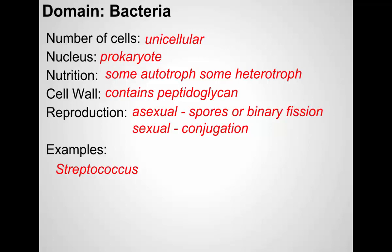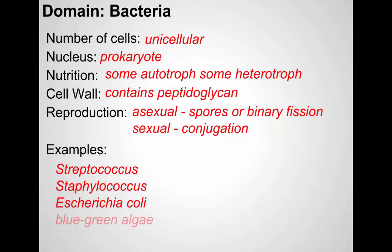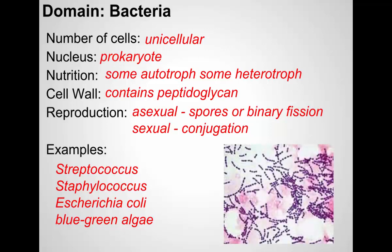Have you ever had strep throat? That's an infection of Streptococcus bacteria — those are the ones that cause strep throat. A staph infection is caused by another type of bacteria, Staphylococcus. E. coli — there are many types; some are beneficial and live in our gut, helping us break down food and absorb certain vitamins. Others can cause digestive problems and food poisoning. Blue-green algae are photosynthetic bacteria. Bacteria are often classified by their shape — rod-shaped, sphere-shaped, or spiral-shaped.